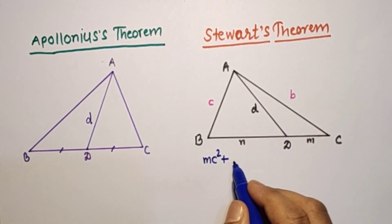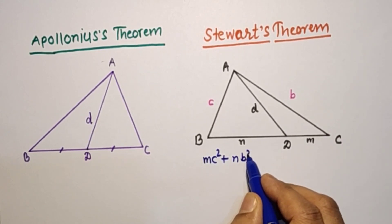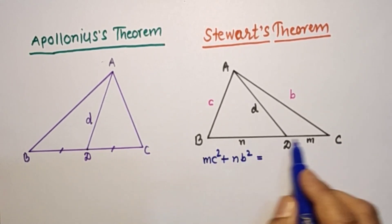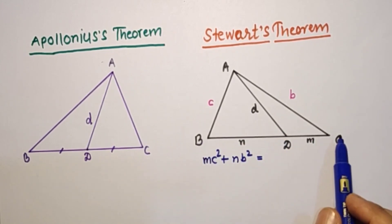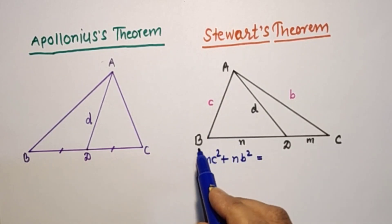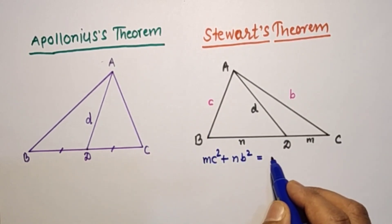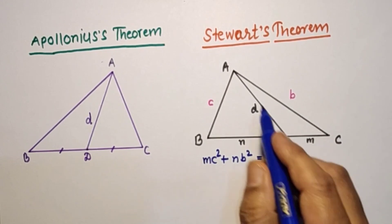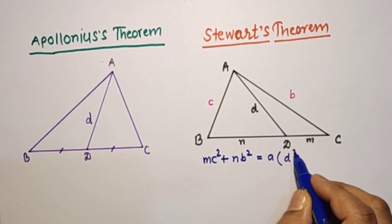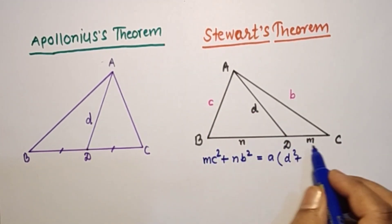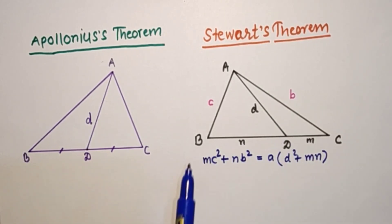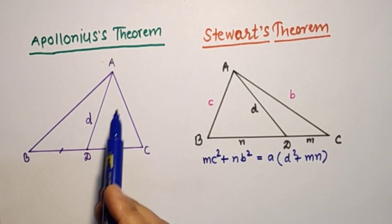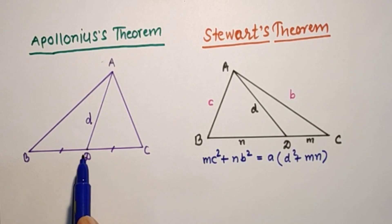By Stewart's theorem we can say that M times c squared plus N times b squared equals the whole length, which is (M plus N), times the side BC opposite to vertex A — we call this 'a' — multiplied by D squared, plus the product of the two segments M and N.